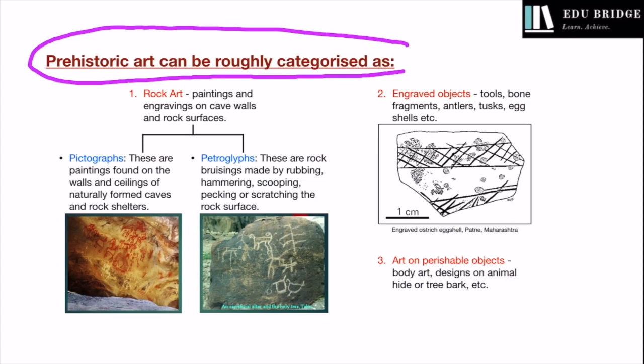There are three different types of prehistoric art: rock art, engraved objects, and art on perishable objects. Rock art comprises paintings and engravings done on cave walls and rock surfaces — these were in a permanent location. The second category is engraved objects, which included tools, bones, fragments, antlers, tusks, eggshells, etc., on which some engravings or paintings could have been done. The third type included art on perishable objects such as body art, or designs on animal hide or tree bark.